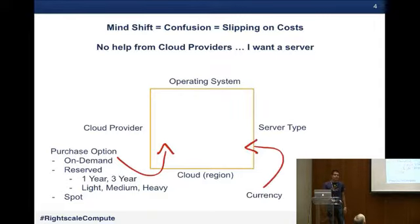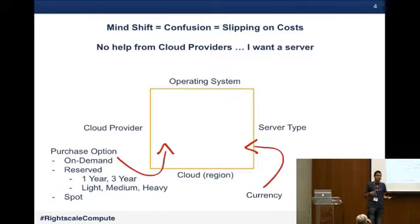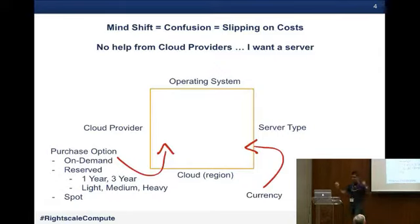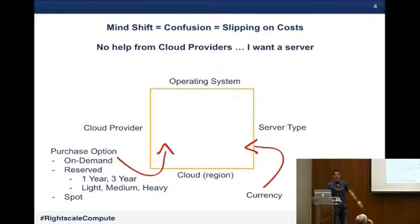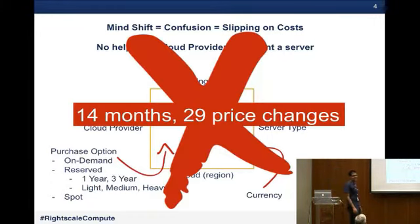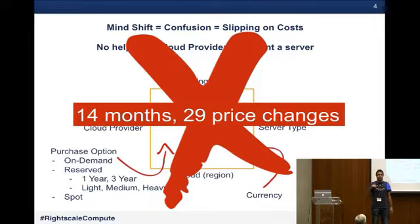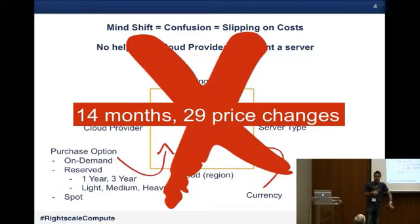On top of that there's currency — different cloud providers charge differently based on where they operate. Rackspace UK charges in British pounds, Rackspace USA in US dollars. So all these different clouds could be charged in different currencies. And even once you've chosen everything — prices just changed. Over the last 14 months there have been 29 different price changes ranging across compute, databases, and storage. You can see the full breakdown at blog.rightscale.com.